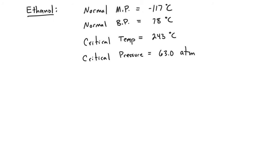Another way we might be asked about phase diagrams is to construct one from data. In this case, we have ethanol, which has a normal melting point of minus 117 Celsius and a normal boiling point of 78 degrees Celsius. Both of these indicate pressures of about one atmosphere — about 760 torr or 101,000 pascals — since "normal" means atmospheric pressure. The critical temperature is 243 degrees Celsius and the critical pressure is 63 atmospheres, above which it becomes a supercritical fluid.